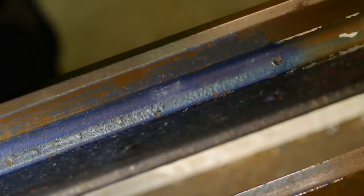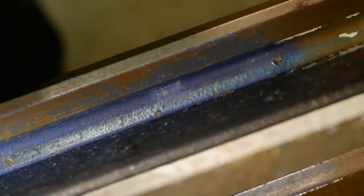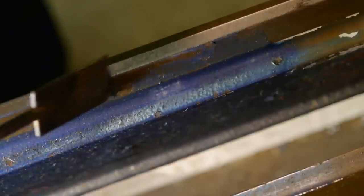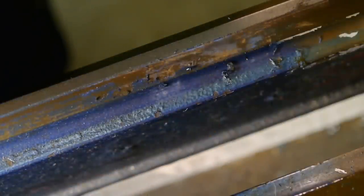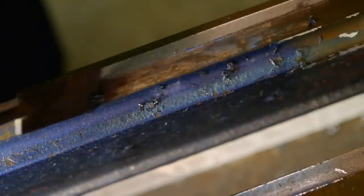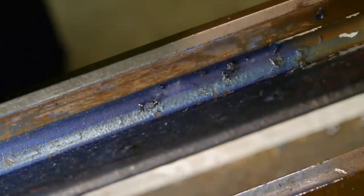When this lathe got its smurf color scheme, they also put some paint on the V-ways. Brilliant, that's just brilliant. Anyway, I need to remove this before I can check the tailstock for alignment.